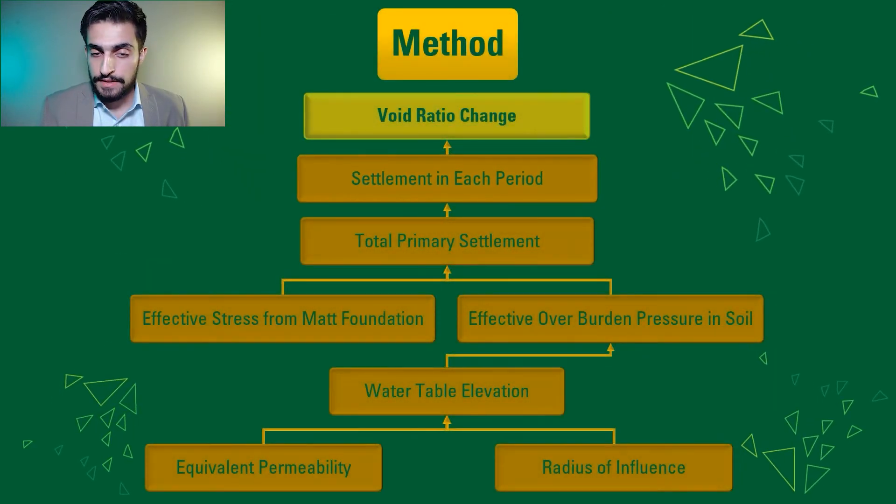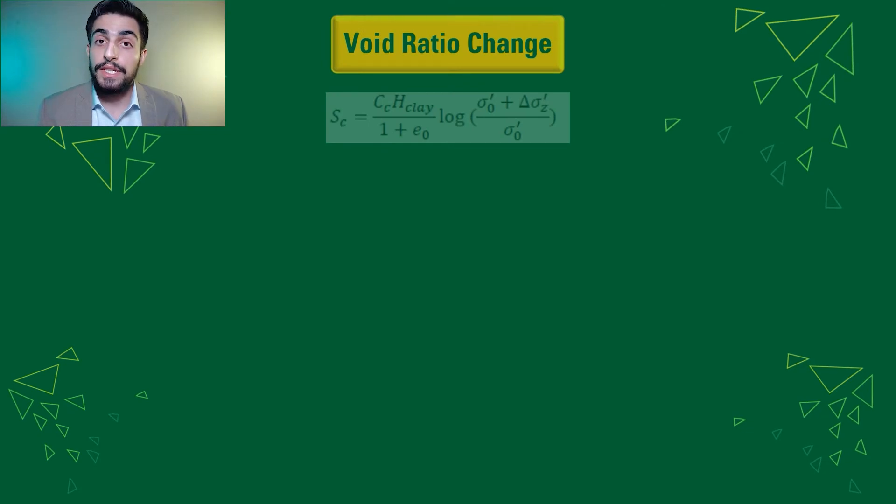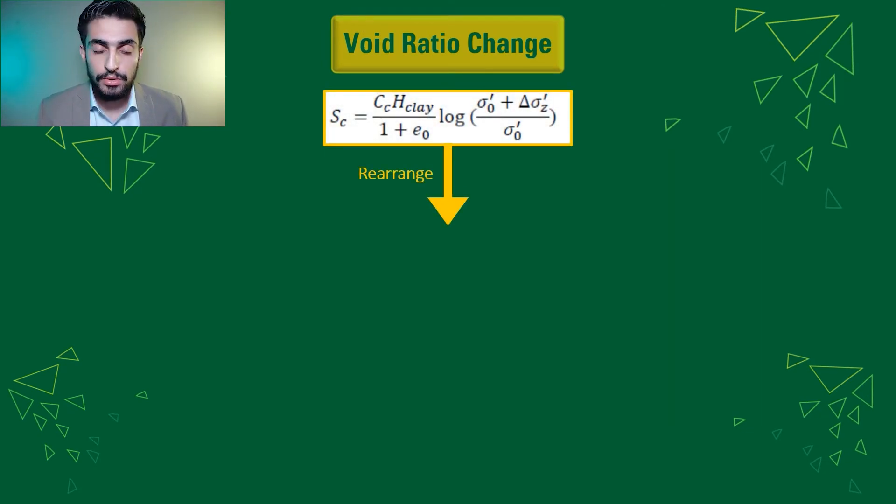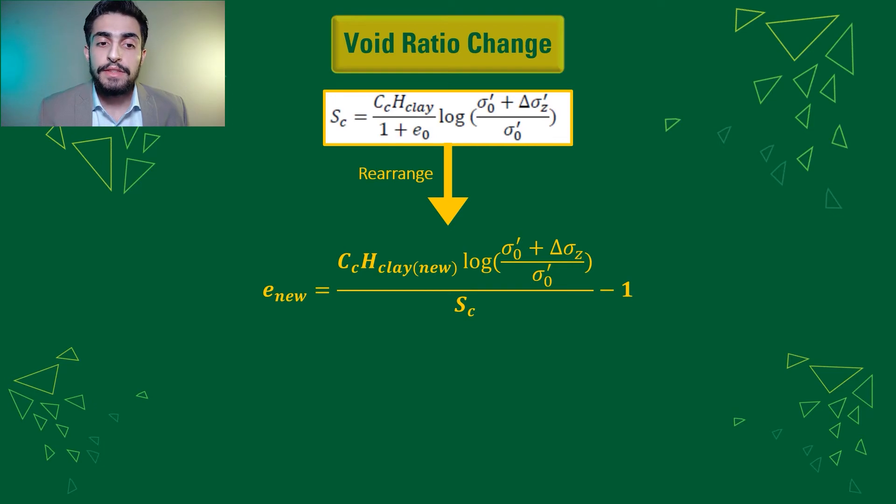After that settlement occurs, the void ratio will change, creating a new void ratio, which is calculated by rearranging the total primary settlement equation corresponding to the new values for the height of the clay layer and giving us the new void ratio of the soil.